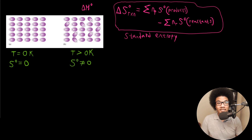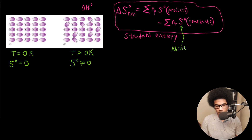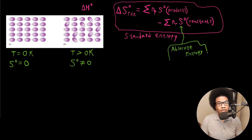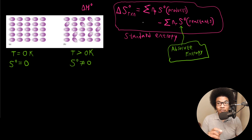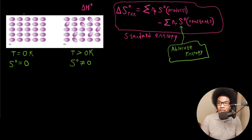Notice that when I put the entropy in the sums, I didn't put a Delta — and I did that for a reason. These entropies are actually very special entropies called the absolute entropy. You can get these from any thermodynamics table; most general chemistry textbooks should have these absolute standard entropies available to you. The reason why we don't use Delta is that for entropy, unlike other thermodynamic variables, we actually have a lower bound to how low the entropy can go, based on a theoretical model called the perfect crystal.